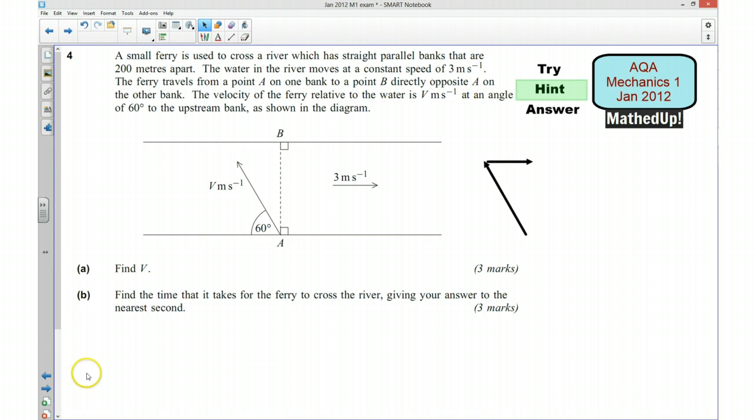Part B says find the time it takes for the ferry to cross the river, giving your answer to the nearest second. So there's two parts to this. We first of all need to know what the resultant velocity is, which will be given by this end of our right angle triangle here. And then we need to use that information to then work out how long it would take to travel the 200 metres across the river.